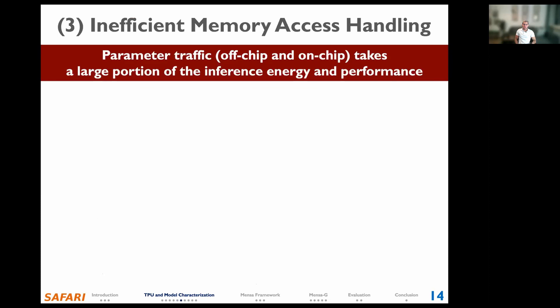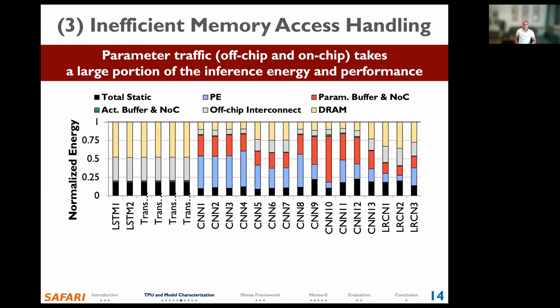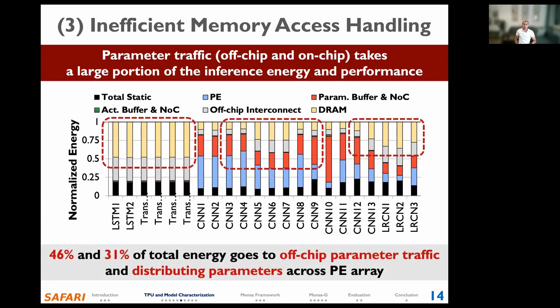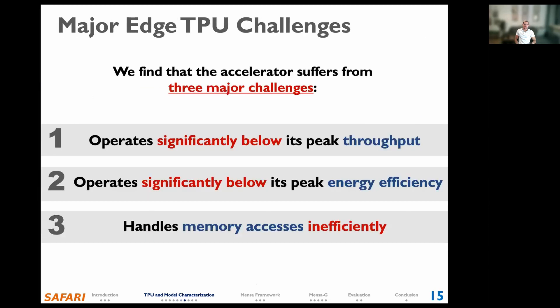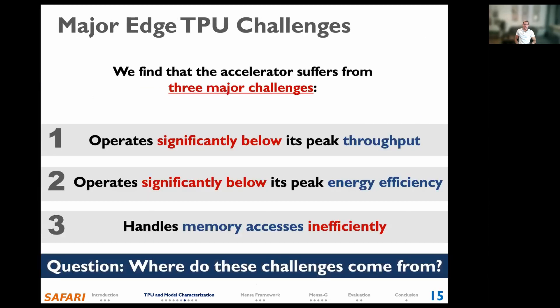Third, we observe that the memory hierarchy of the Edge TPU is not efficient. This figure shows the energy breakdown of different components of the accelerator architecture while executing inference for different models. We observe that 46% of total energy goes to off-chip traffic to DRAM, and 31% of total energy consumption goes to distributing parameters across processing element arrays. After identifying these challenges, the next question is: where do such challenges come from?